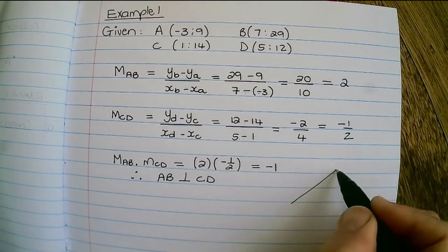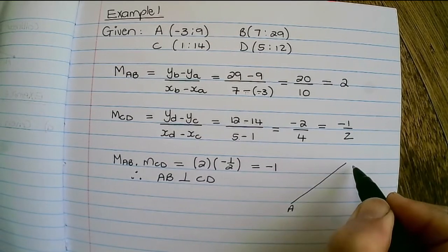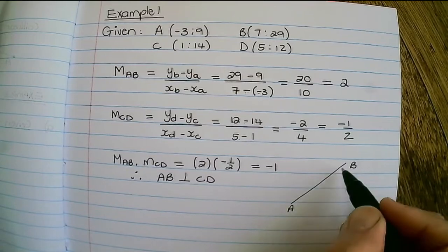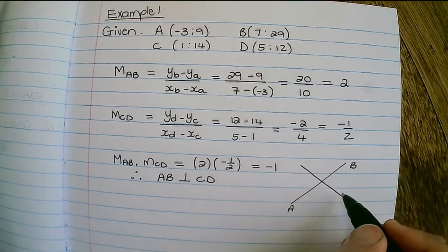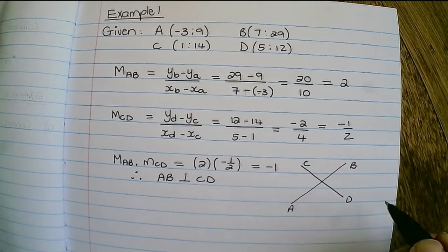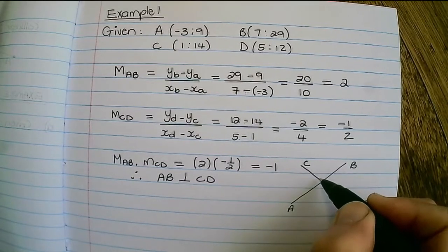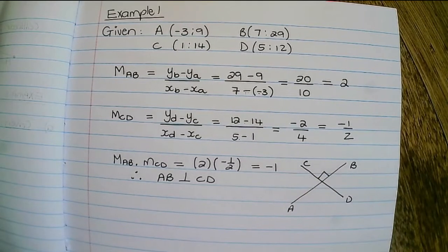So if I draw a rough sketch, I'll have AB, which is increasing, and then they would meet each other at 90 degrees.